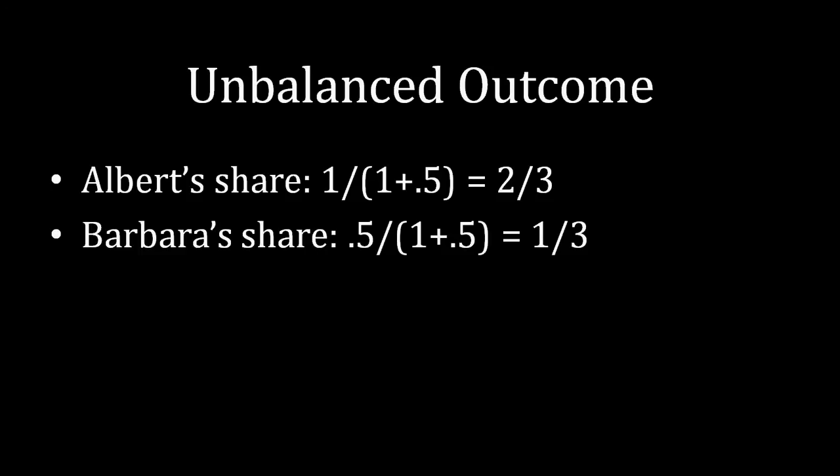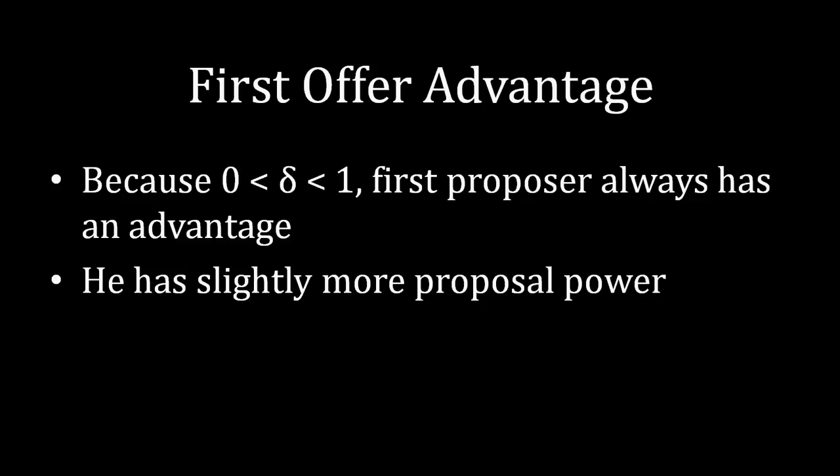And this is not just for δ equals 1/2, this is for any δ at all. Because δ is between 0 and 1, if you compare those two payoffs, the first proposer, the guy who is making the first offer in the first period, is always going to be getting more than the person receiving the first offer, and the person who would only have an offer in the second stage would have to reject the first offer to be able to make a proposal of his or her own.